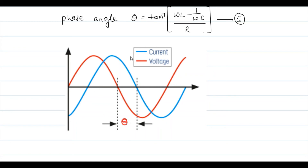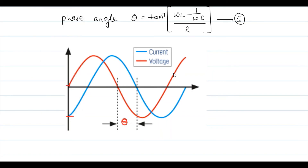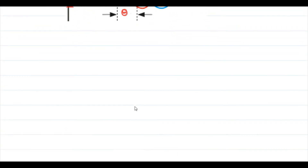In the wave diagram, the current is lagging and the voltage is leading. The instantaneous voltage V(t) is shown, and the instantaneous current I(t) lags it by phase angle θ. Now we will look at the phase difference in the complex plane, i.e., the phasor diagram.